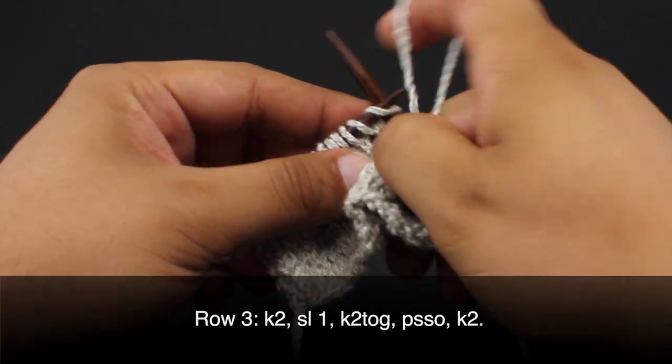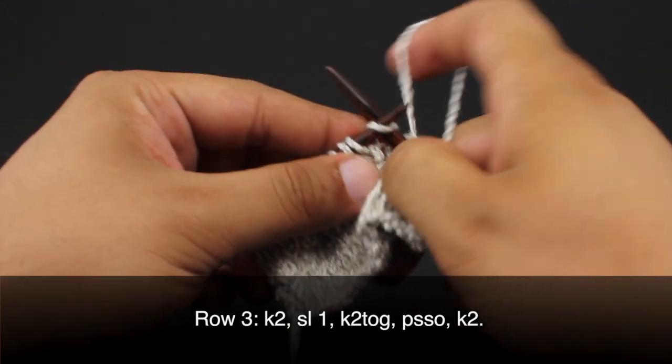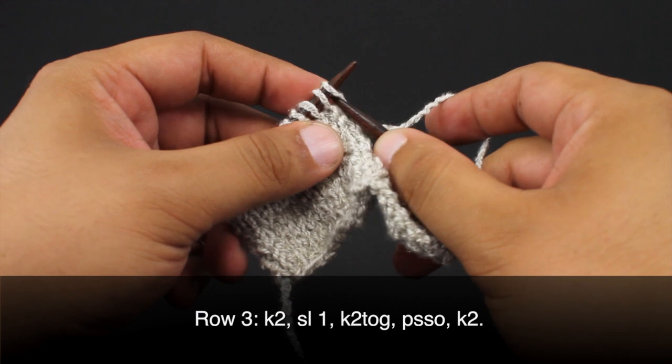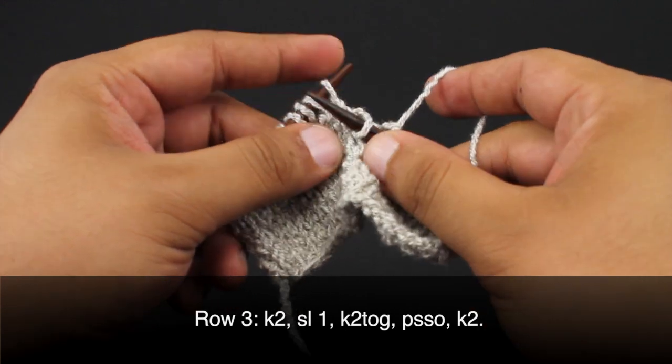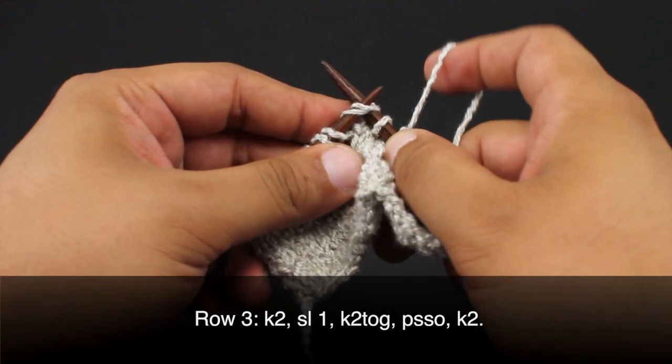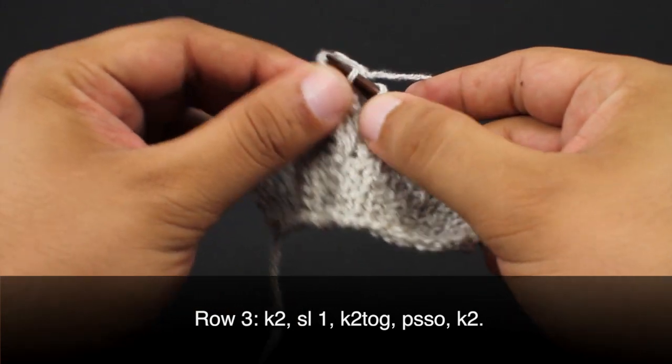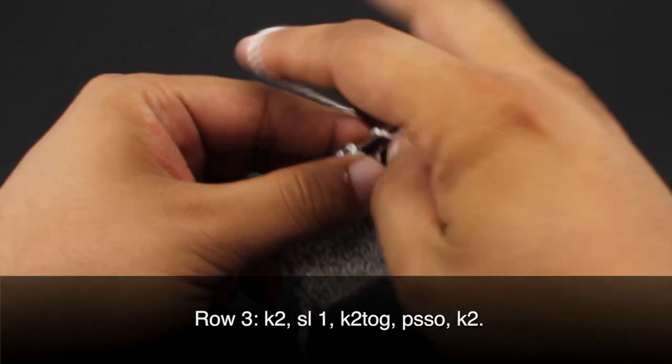Row three: we're going to begin by knitting two, then slip the next stitch knitwise. Come in through the front of the stitch, then knit two together and pass the slip stitch over. Finish up by knitting two again.